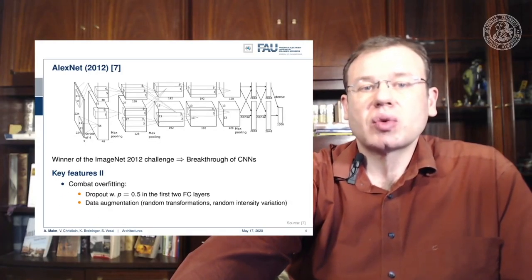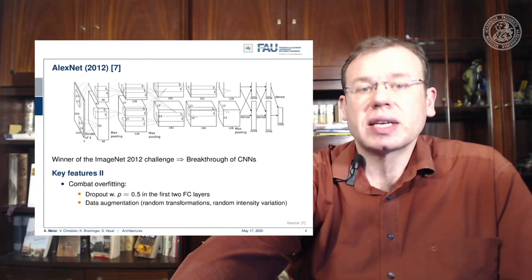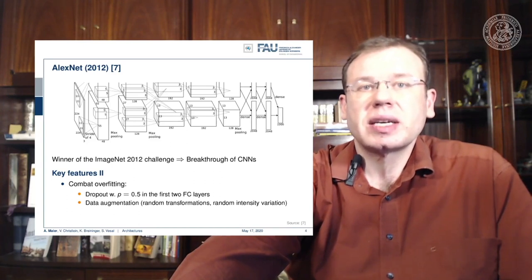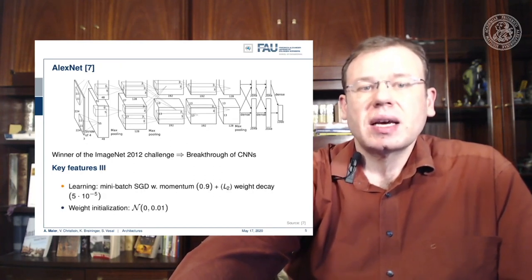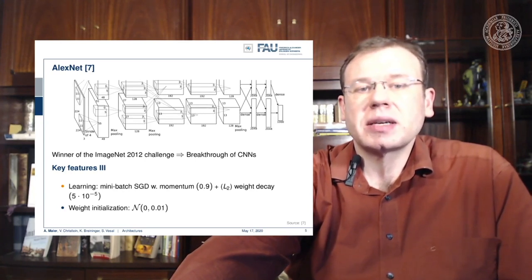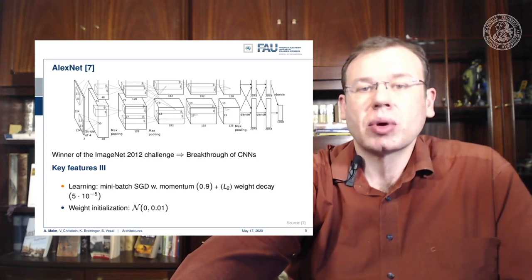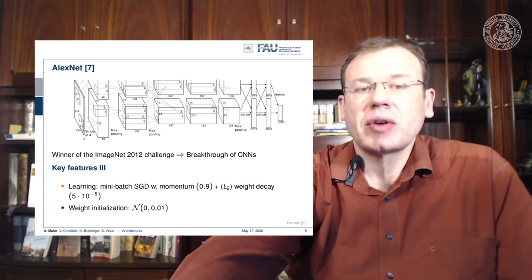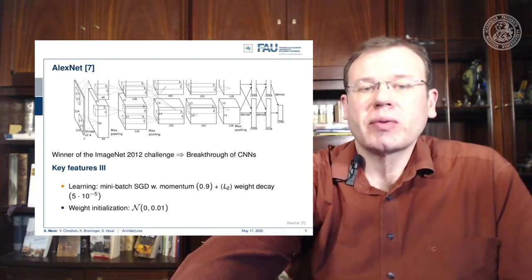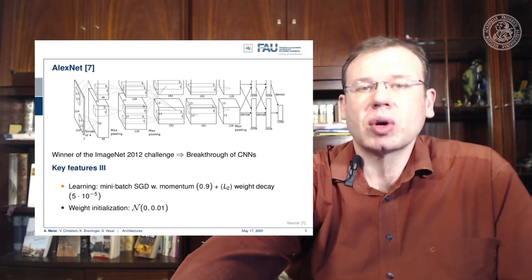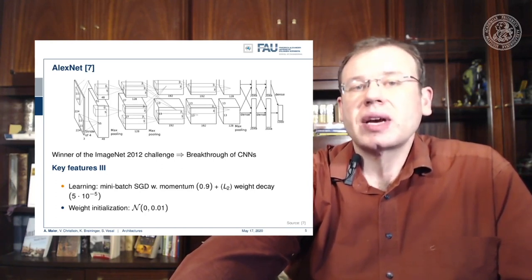To combat overfitting, AlexNet used dropout with a probability of 0.5 in the first two fully connected layers, and it used data augmentation with random transformations and random intensity variations. Another key feature was mini-batch stochastic gradient descent with momentum 0.9 and L2 weight decay with a parameter of 5×10⁻⁵. It used a simple weight initialization with a normal distribution and small standard deviation — though we've seen much better approaches in previous videos.